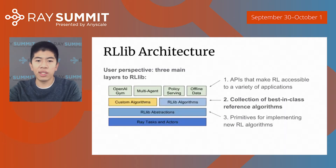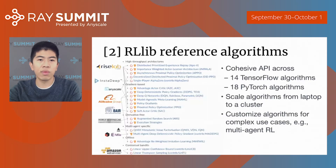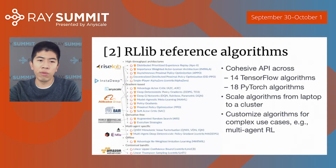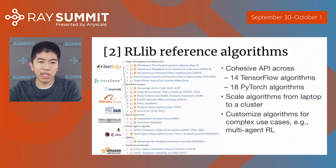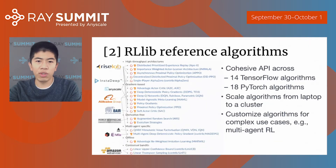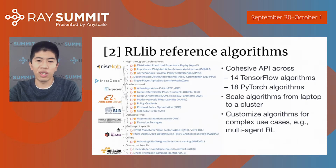The second thing RLib provides is a collection of reference algorithms. Here's a list of algorithms from the documentation at RLib.io. RLib provides a cohesive API across more than 14 TensorFlow algorithms and 18 PyTorch algorithms. It lets you easily scale all of these algorithms from a laptop to a cluster, and also customize them for complex use cases such as multi-agent RL. These algorithms come from a variety of community contributors — obviously RightsLab and AnyScale, but also a number of other companies and university groups — and we're very grateful for these contributions.